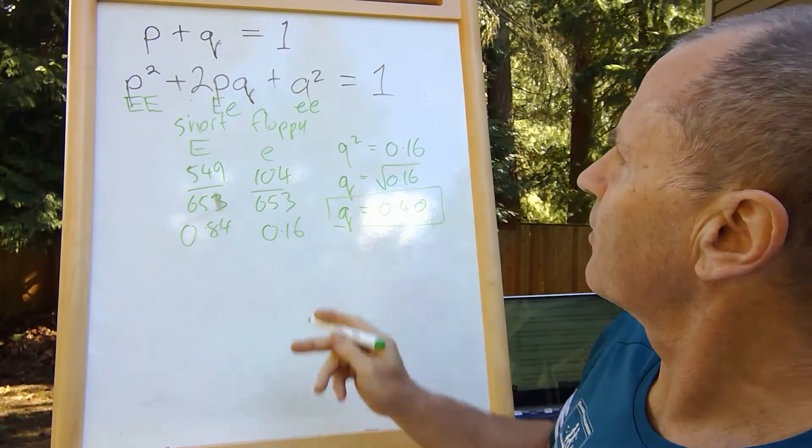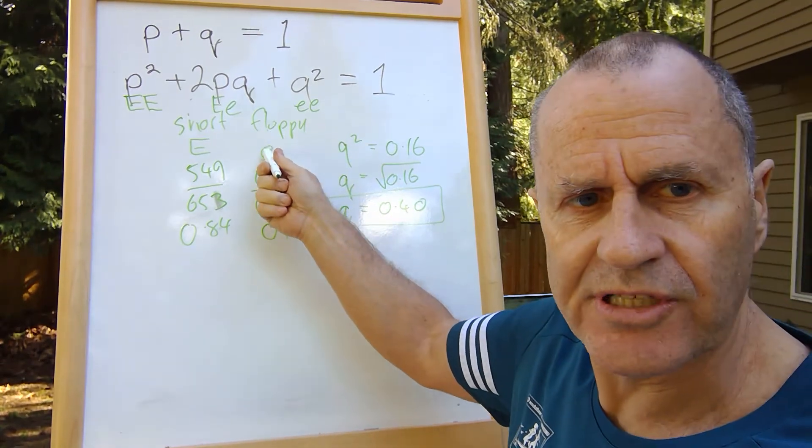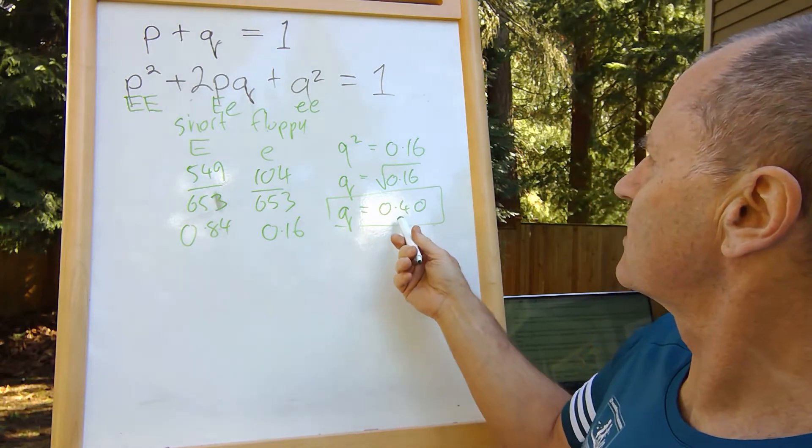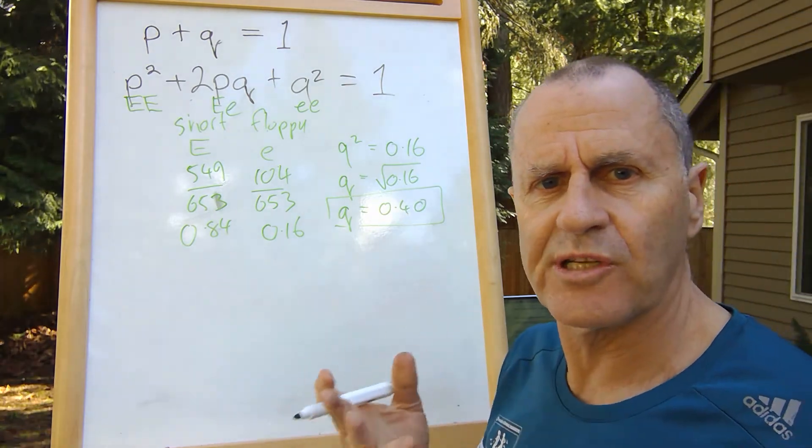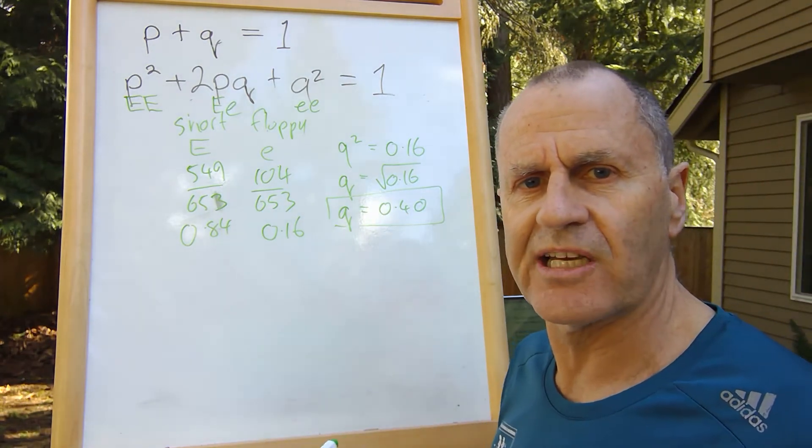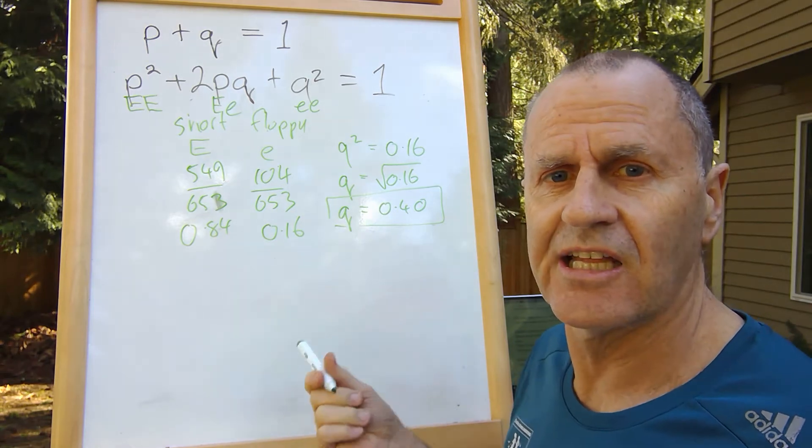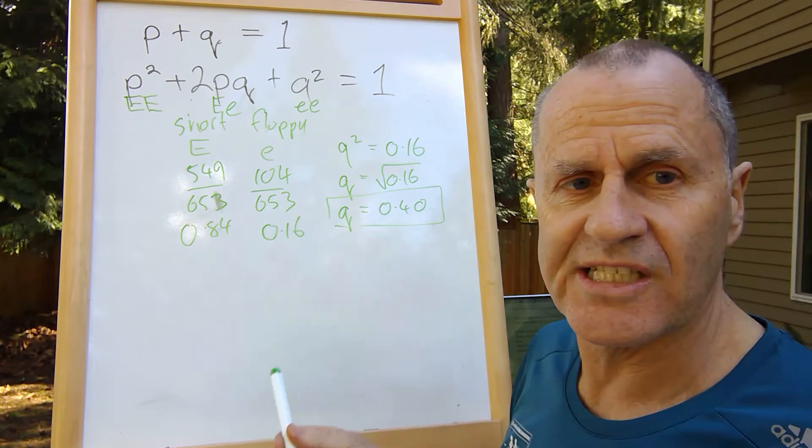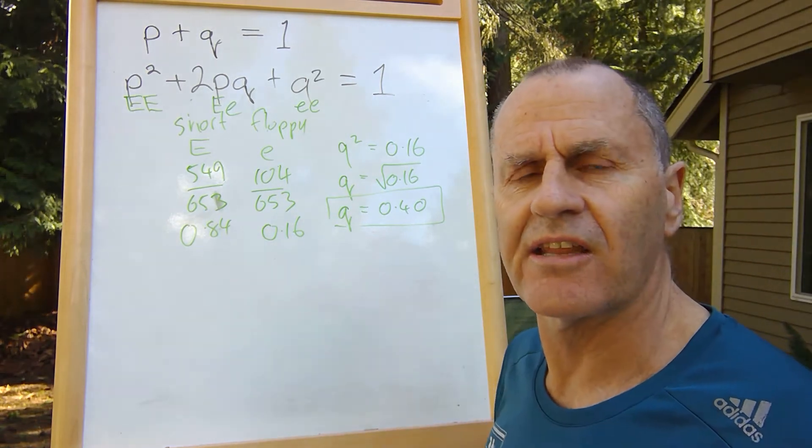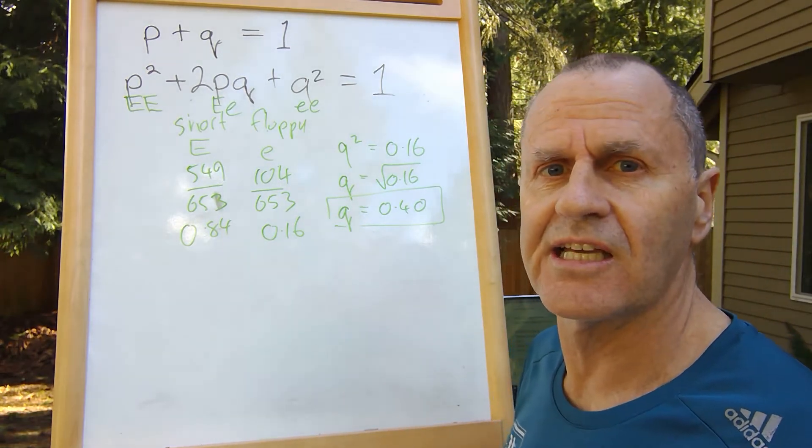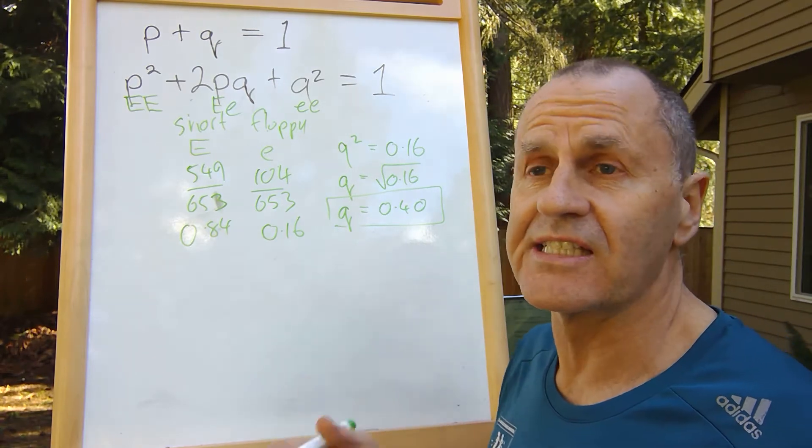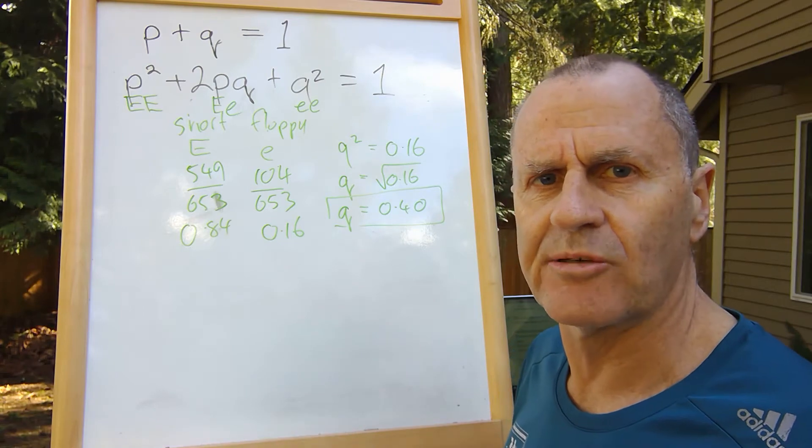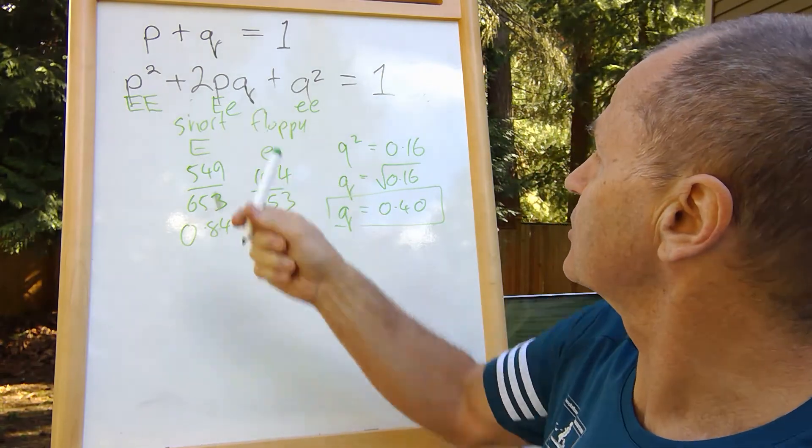So that is the frequency of the recessive allele small e for floppy ears. 0.4 means 40 percent of the alleles in this population are for floppy ears, which is a lot more than you'd think from just looking at the 16 percent that actually have floppy ears. Most of those rabbits that have the allele for floppy ears have their recessive allele masked by the dominant because they're heterozygous.